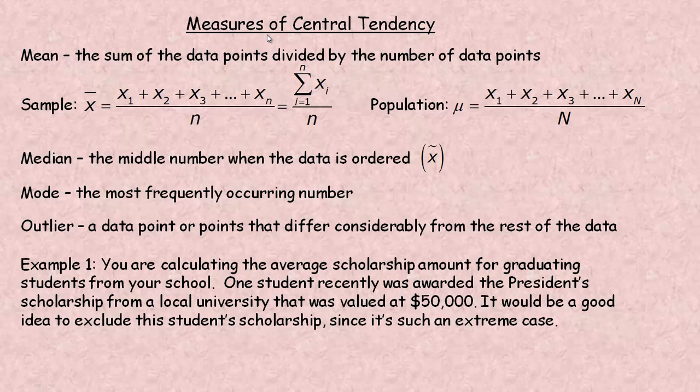When I say the word average, I'm not referring to the mean specifically. Average here means what's a normal number in this group. An outlier is a data point that differs considerably from the rest of the data. For example, if you're calculating the average scholarship amount for graduating students and one student was awarded a scholarship valued at $50,000, that's probably a lot more than the average student will get. It would be a good idea to exclude that student's scholarship because it's such an extreme case.